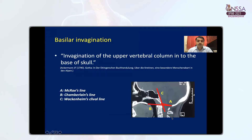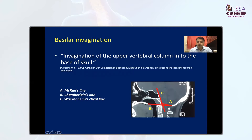Basilar invagination is the invagination of the upper vertebral column into the base of skull, and this was defined by Ackermann in 1790. The radiological rate is defined when the tip of the odontoid process lies above McRae's line, Wackenheim's canal line, and 5 mm above the Chamberlain line.